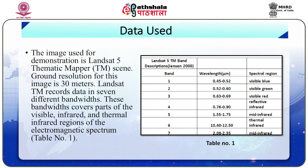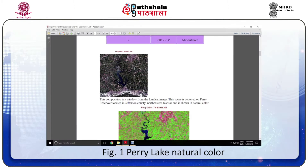The image used in this demonstration is a Landsat 5 Thematic Mapper scene. Ground resolution for this image is 30 meters. Landsat TM records data in seven different bandwidths, covering parts of the visible, infrared, and thermal infrared regions of the electromagnetic spectrum, as shown in table number one. This composition window is from the Landsat image. This scene is centered on the Perry Reservoir located in Jefferson County, northeast Kansas, and is shown in natural color in figure number one.